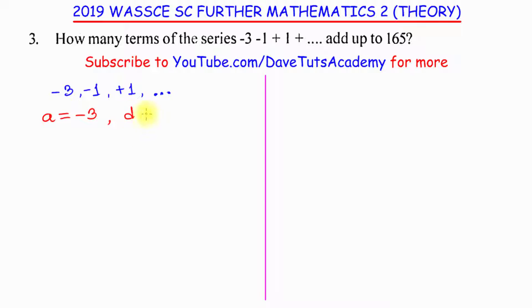And then the common difference is the difference between the subsequent terms and the initial term. In this case, it would be maybe minus 1 minus minus 3, or it can be 1 minus minus 1. In both cases, you see that minus 1 minus minus 3, these two negatives multiply to become plus, so we have minus 1 plus 3, and that's going to be 2.